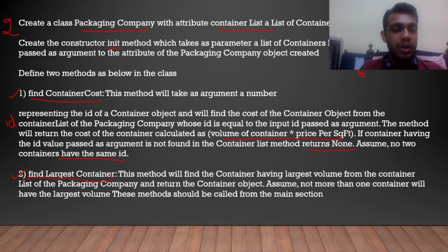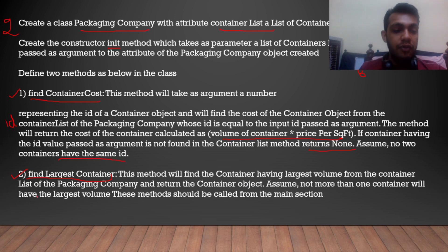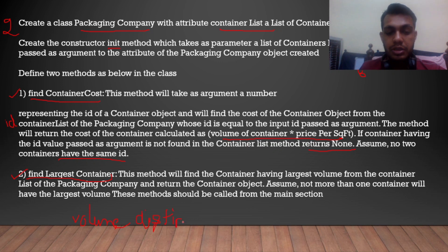After that, we have to go to the second method, findLargestContainer. As the name suggests, we have to find the largest container — the one having the largest volume. This method will find the container having the largest volume from the container list of the packaging company and return the container object. Assume no more than one container will have the largest volume — so volumes will also be distinct.